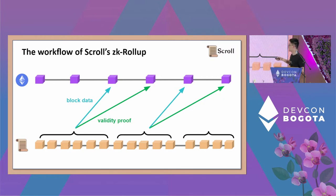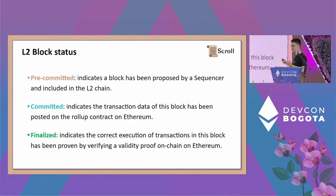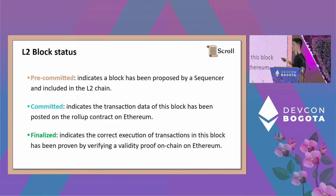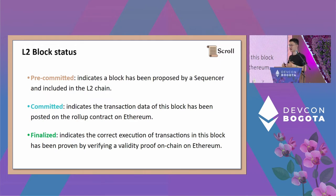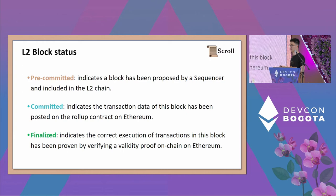You submit the block data first on-chain to get a 'committed' version, where users can see their transaction on-chain even without the proof. Then you wait for proof generation to finally finalize the transaction. Accordingly, there are three different statuses for a layer two transaction. The first is 'pre-committed': your transaction is sent to the sequencer and included in a layer two block — you get a pre-confirmation in maybe three seconds. The second is 'committed': your data is already rolled up on-chain, which usually takes minutes, and users can replay the data themselves. The third is 'finalized': proof has been generated and verified on layer one — that's the final confirmation.